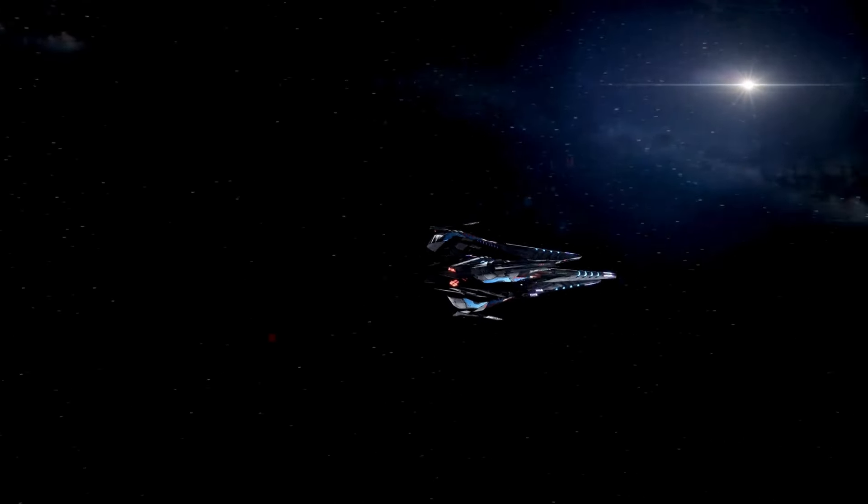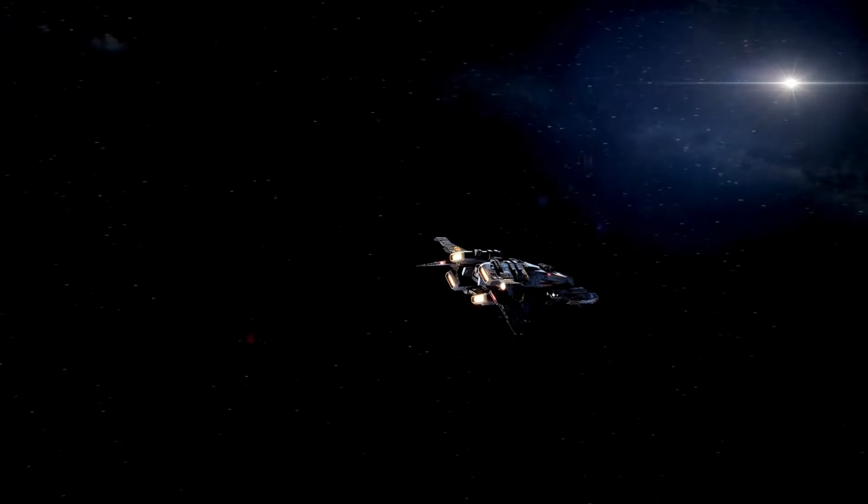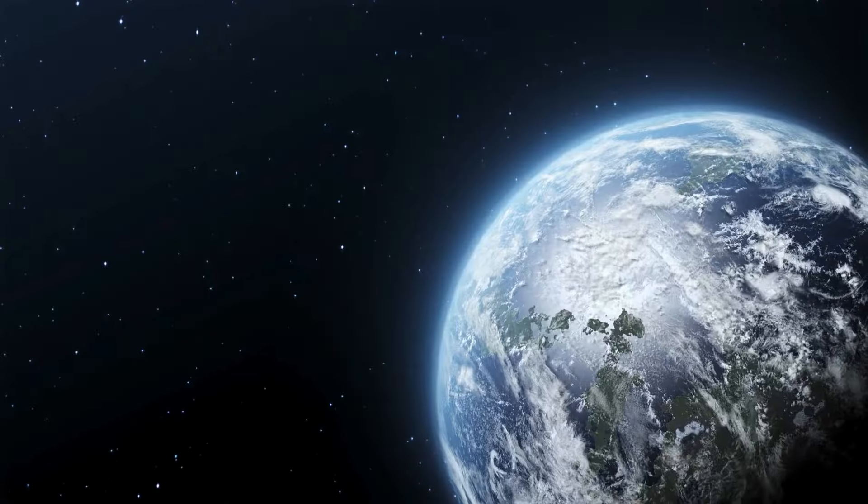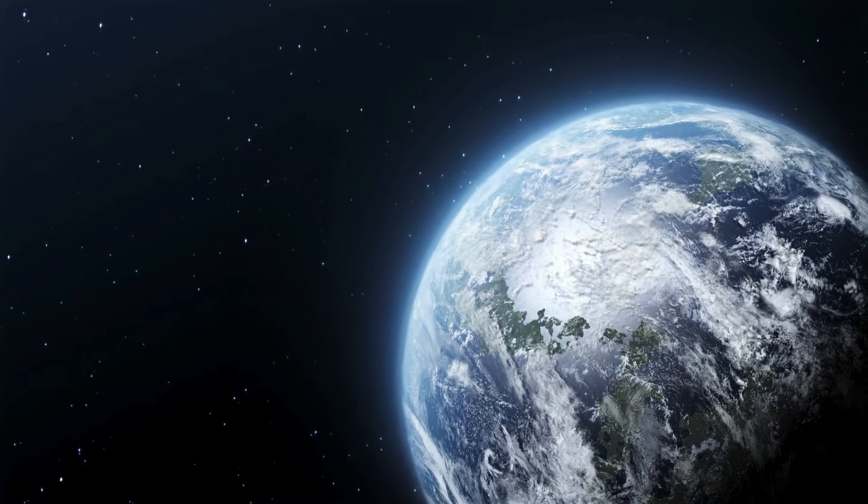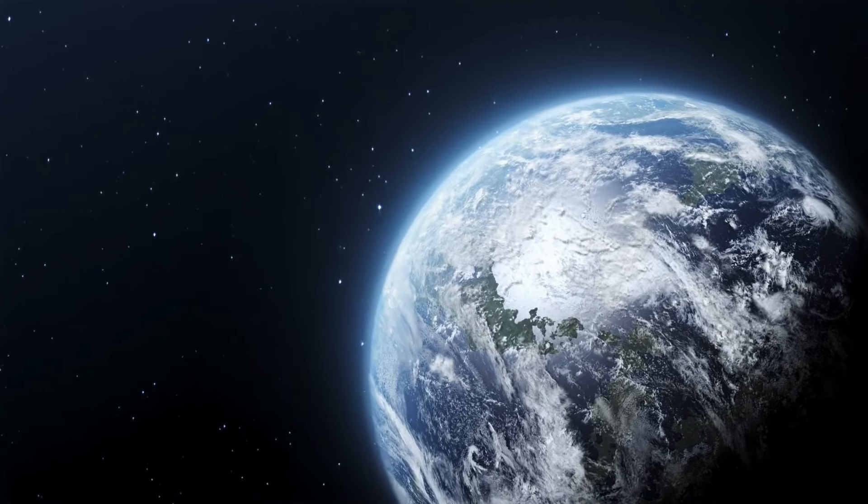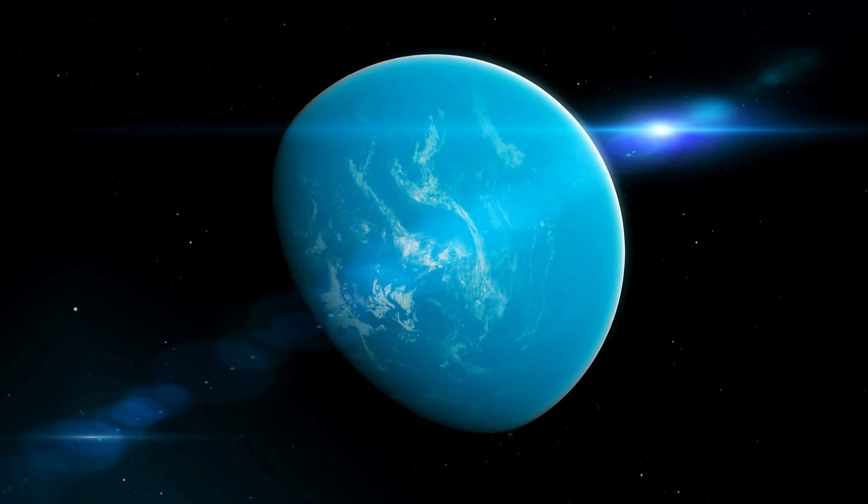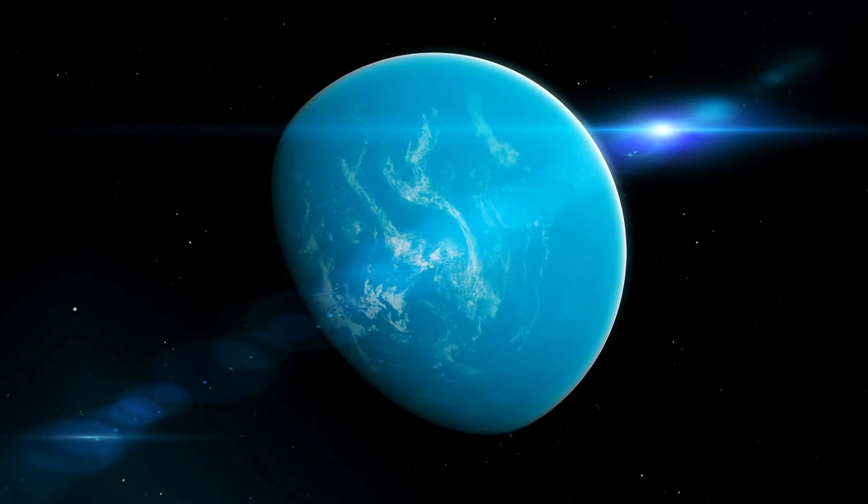For example, Proxima b, the closest exoplanet to Earth, is in the habitable zone of our nearest neighbor, the dwarf star Proxima Centauri, about 4.25 light-years away. Since the exoplanet was 20 times nearer to its star than the Earth is from the Sun, Proxima b was believed to be tidally locked with a permanent day side and night side, similar to our Moon which faces Earth with the same side at all times.